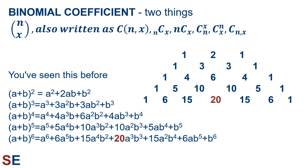Two quick things before continuing. First, N choose X is also written using other nomenclature — various other notations represent the same fraction of factorials, so when reading about binomial probabilities, you'll need to figure out which shorthand is being used. Second, you've actually seen these binomial coefficients before when you did algebra and learned about expanding sums in parentheses raised to a power. You probably learned about Pascal's triangle, which allows you to figure out the coefficients. In row 6 of Pascal's triangle, you can see where the 20 comes from for 3 successes and 3 failures — it's the coefficient matching a to the third times b to the third. And that's not a coincidence.